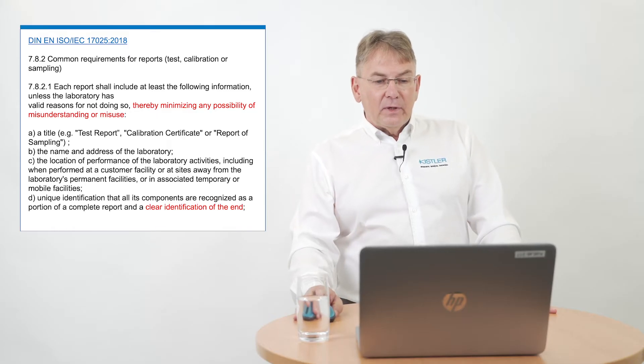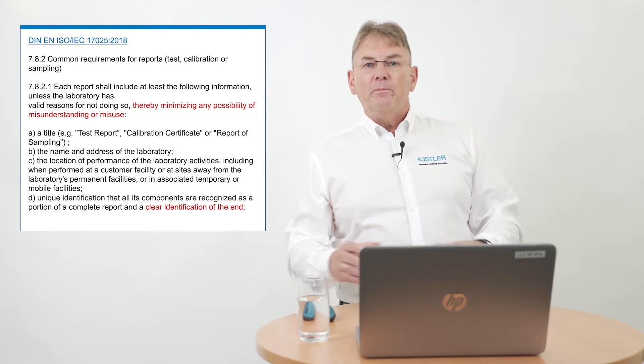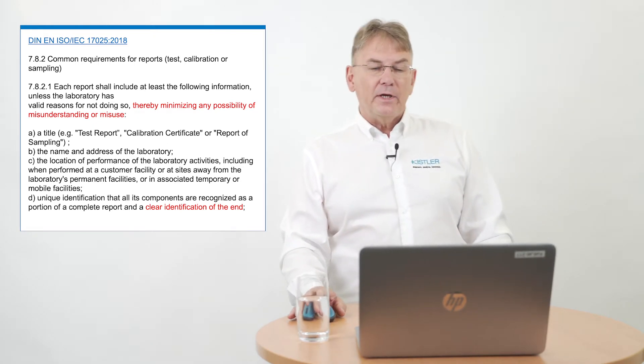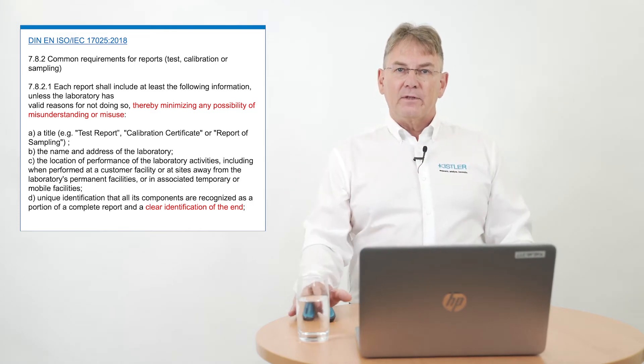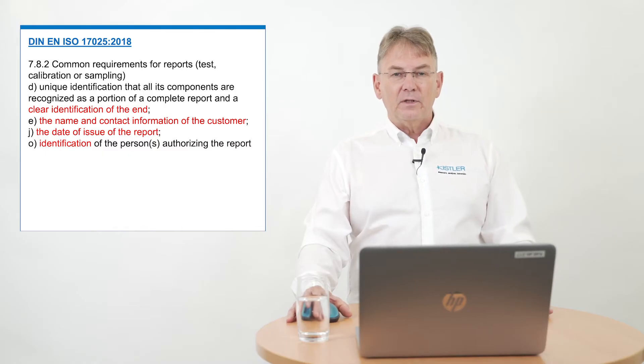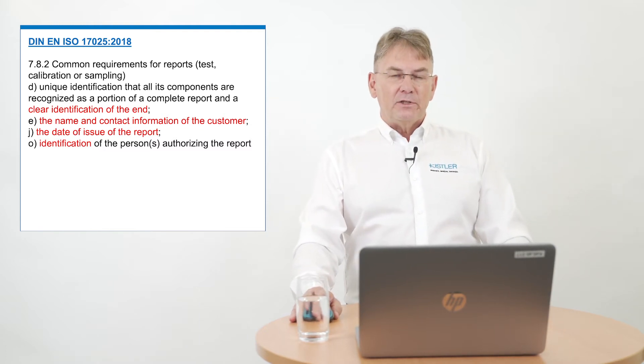Something very new is a clear identification of the END. In former calibration certificates you probably have seen 'page 3 of 3' or 'page 2 of 3.' Right now, there must be a clear identification of the END, like 'End of Certificate.' They want to prevent additional information from being added to the certificate. You also need to find the name and contact information of the customer. Sounds silly, sounds very common — but even big companies change their names so often. Please check: it's your calibration certificate and you have to insist on the proper name.